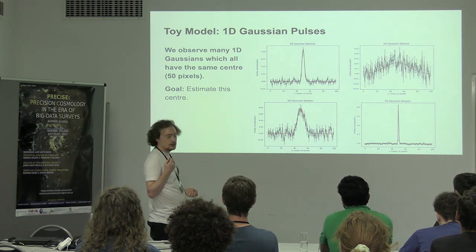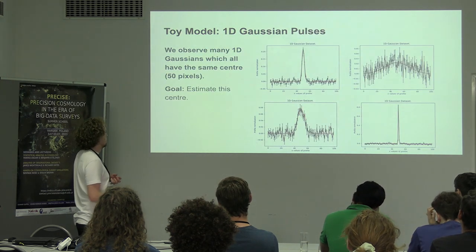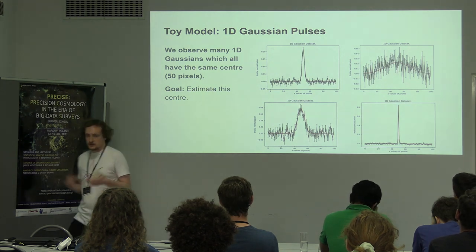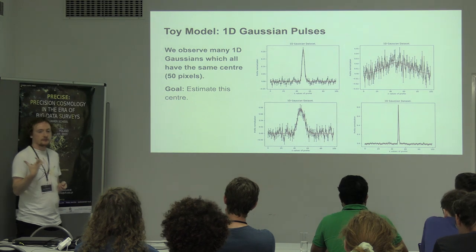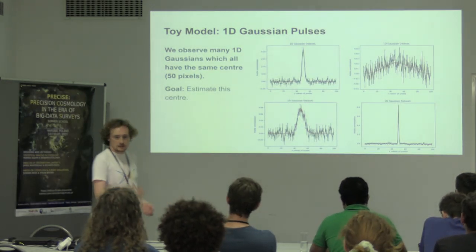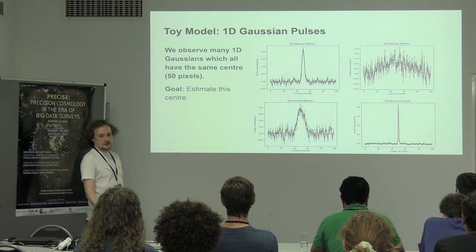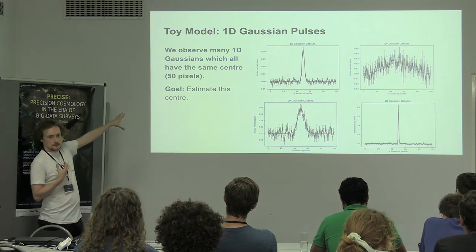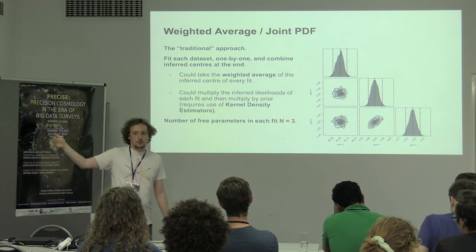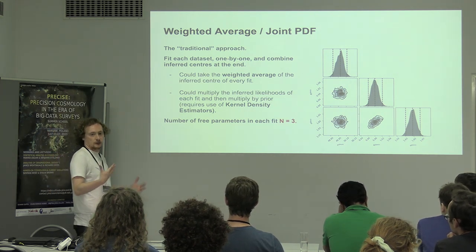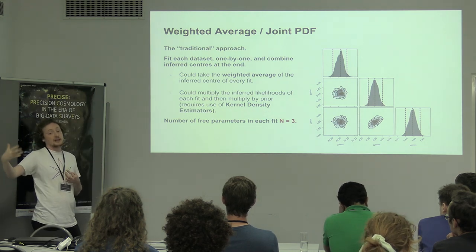We're going back to the toy model of 1D Gaussian pulses for sessions four and five — partly because lensing gets computationally expensive and takes more time to run, and partly because conceptually these are really simple ways to get the core concepts across while being quite data-agnostic. The first example is: suppose I've got a set of observations of 1D Gaussian pulses with different noise levels and different appearances, but the thing I know going in is that all of these Gaussian pulses have the same centre. The goal is to estimate this centre, and I'm going to show how I might do this first using the traditional approach — fitting each pulse one by one — and then using this graphical modelling approach, to see what happens and how graphical modelling can exploit more information than the traditional approach.